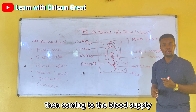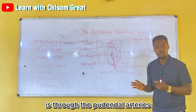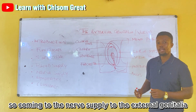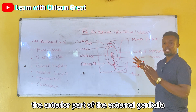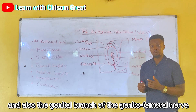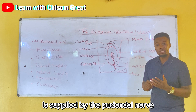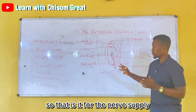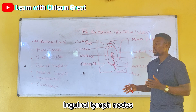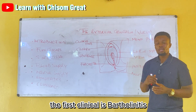Coming to the blood supply: the arterial supply to the external genitalia is through the pudendal artery, and the venous drainage is through the pudendal veins. For the nerve supply, the anterior part is supplied by the ilioinguinal nerve and the genital branch of the genitofemoral nerve, while the posterior aspect is supplied by the pudendal nerve. The lymphatic drainage is through the superficial inguinal lymph nodes.